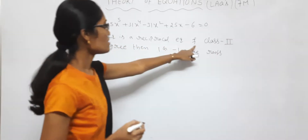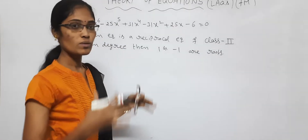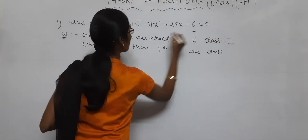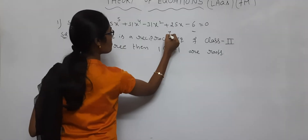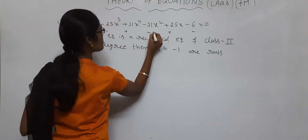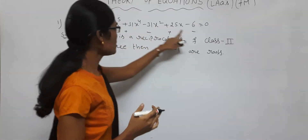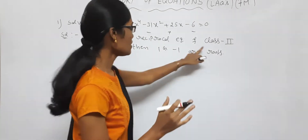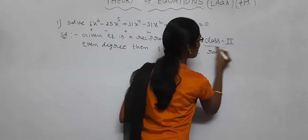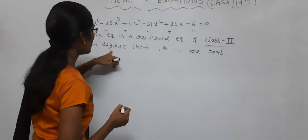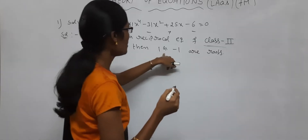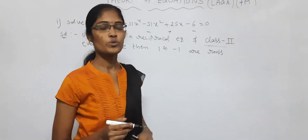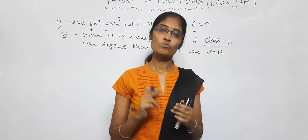The given equation is a reciprocal equation of class 2. How can you say this is class 2? See here: the signs are plus, minus, minus, plus, plus, minus — opposite signs. So this is class 2. And the degree is even — power 6 is even degree. Therefore the roots include 1 and minus 1.